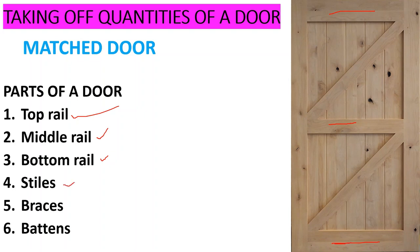And then we have the stiles, these ones, and then we have the braces. We have two braces, this one and this one. And then we have the battens, these ones that are running vertical and horizontal. So those are the parts that we have for that door.